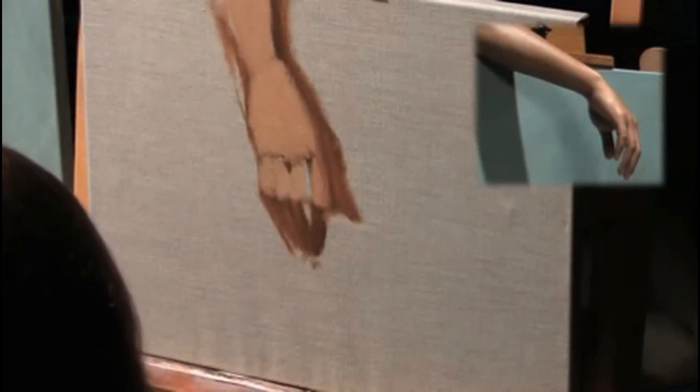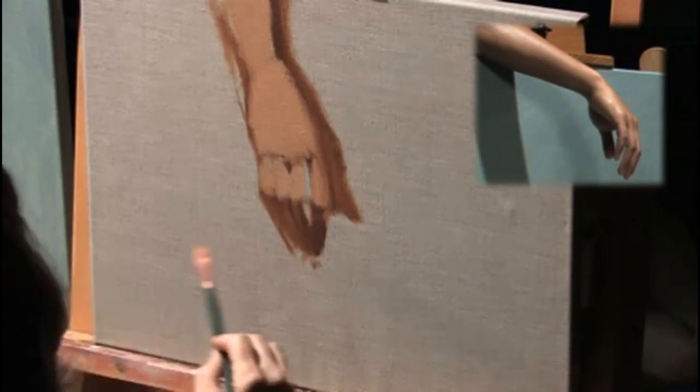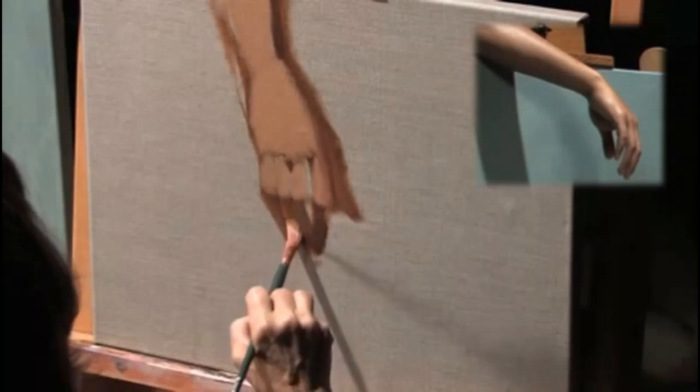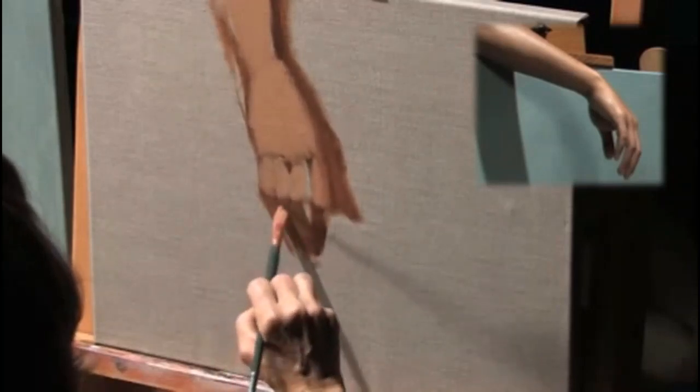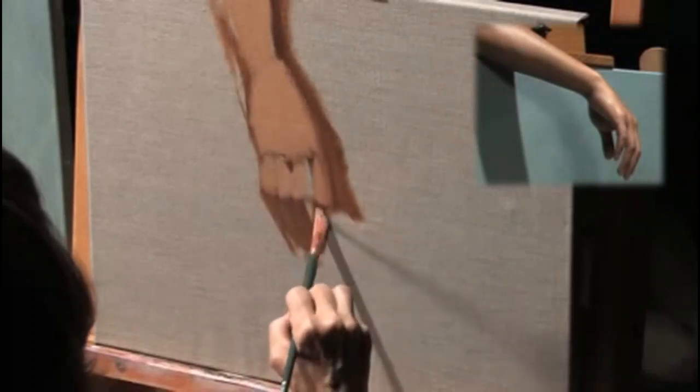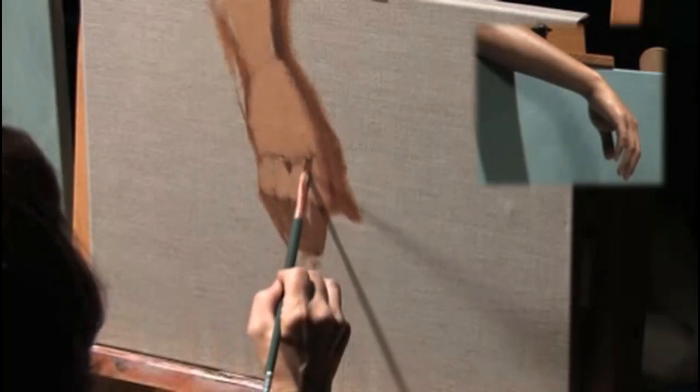Now let's go back into the shadows on the finger with a little cooler color and slightly lighter value. We're just going to repeat the shapes that we've seen, keeping them fairly tight together. And a little warmth on the inside here.